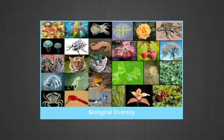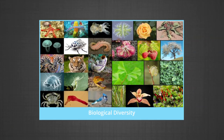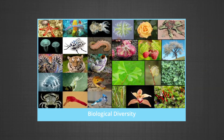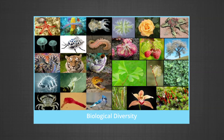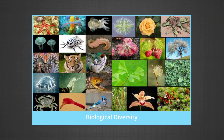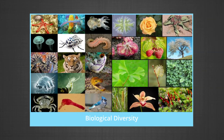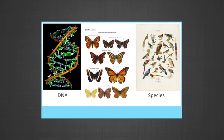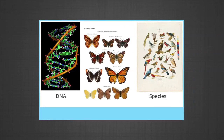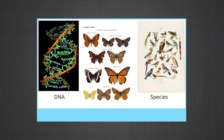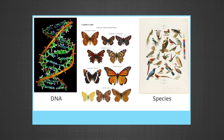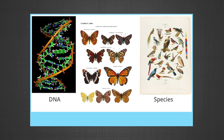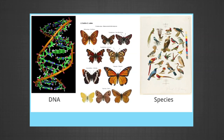Biological diversity, or biodiversity, is the term given to the variety of life on Earth. It is the variety within and between all species of plants, animals, and microorganisms, and the ecosystems within which they live and interact. Biodiversity is a huge concept which can be approached at any level — from the chemistry of DNA to variations within one species, to the classification of species themselves.